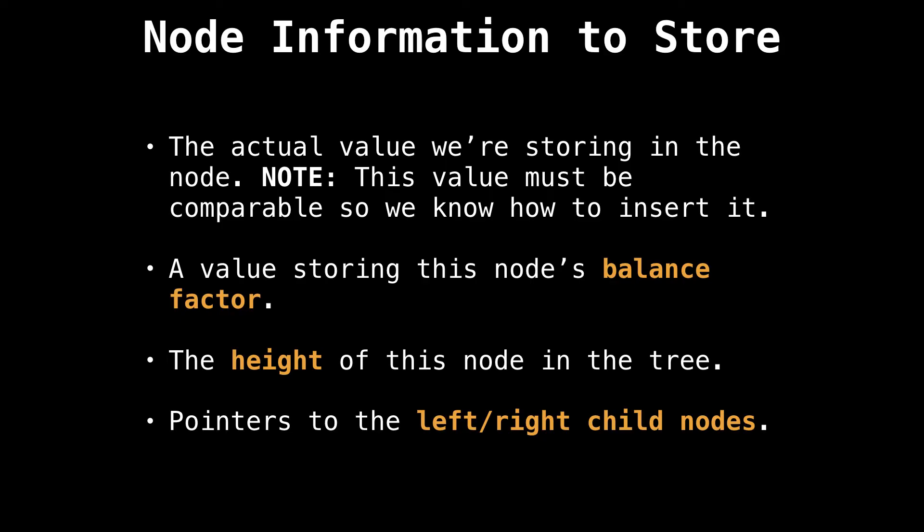In terms of information we need to store in each node to actually make the AVL tree work, what we'll need is the actual value the node stores. This value must be comparable so we know how to insert it and in what position it goes in the tree. Then we'll also need the balance factor and height of the node, as well as the left and the right child pointers. As the algorithm executes, we'll need to update these values, so keep that in mind.